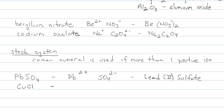CuCl looks pretty innocent. I have a copper ion and a chloride ion. The negative ion charge — chlorine is minus 1 — so copper has to be plus 1. However, copper has two possibilities: +1 or +2. Make sure you look in the periodic table. So this would be called copper(I) chloride.